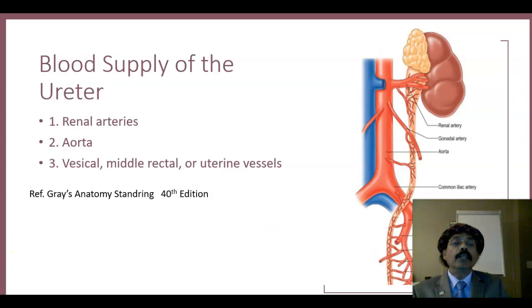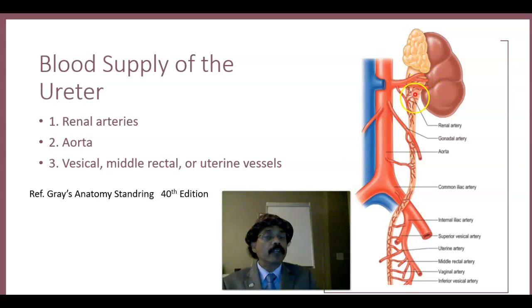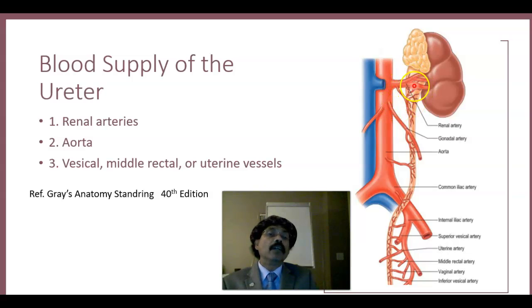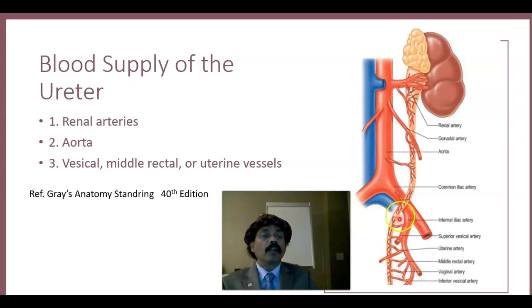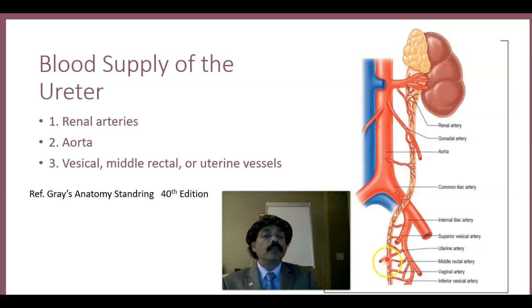Regarding the blood supply of the ureter: because the ureter is a very long structure — around 25 cm, with about 10 cm inside the abdomen and 10 cm inside the pelvis — it has many blood supplies. These come from the renal artery, from the gonadal artery (either testicular or ovarian artery), possibly more than one branch from the aorta, from the iliac artery, from the vesical artery, the uterine artery, and the vaginal artery in females. Even the middle rectal artery contributes in both male and female.